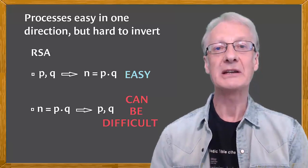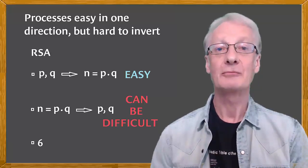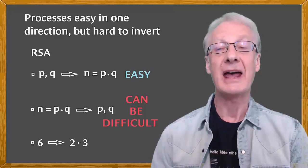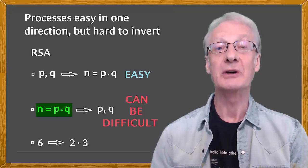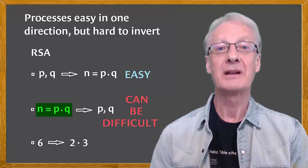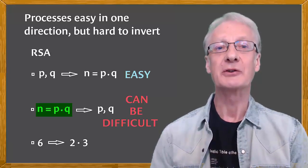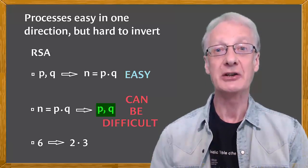For example, if N equals 6, we can quickly see that 6 equals 2 times 3. But if N equal to P times Q is a large number, with certain properties, then it's almost impossible to work out the values of the primes, P and Q.